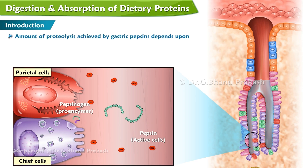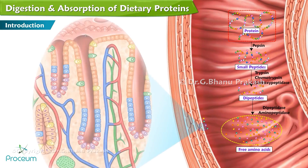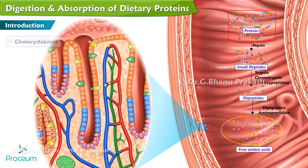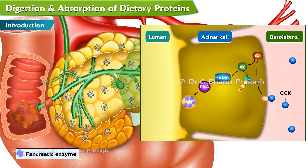The amount of proteolysis achieved by gastric pepsins depends upon the composition of other dietary constituents, gastric motility, and pH. Amino acids released from gastric digestion play an important role in releasing cholecystokinin from duodenal and jejunal endocrine epithelial cells. Cholecystokinin is critical for stimulating the release of pancreatic enzymes responsible for the digestion of all three macronutrients.